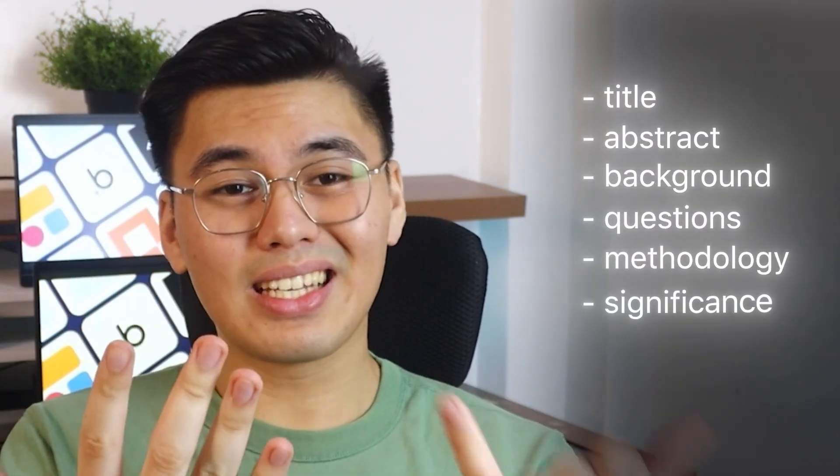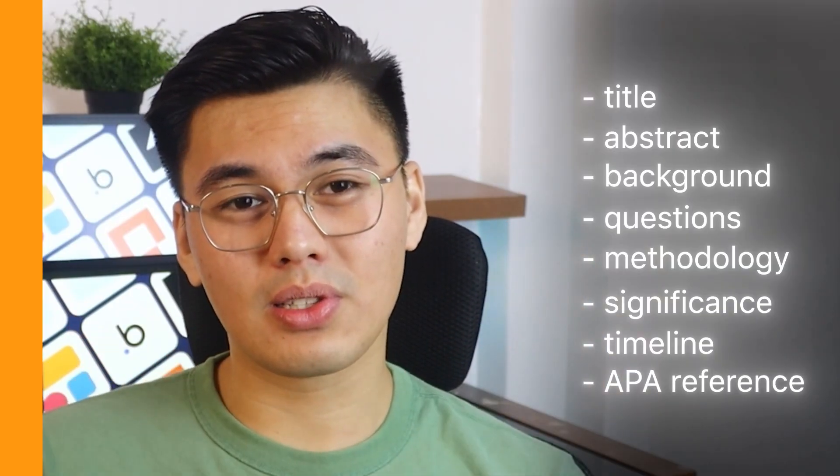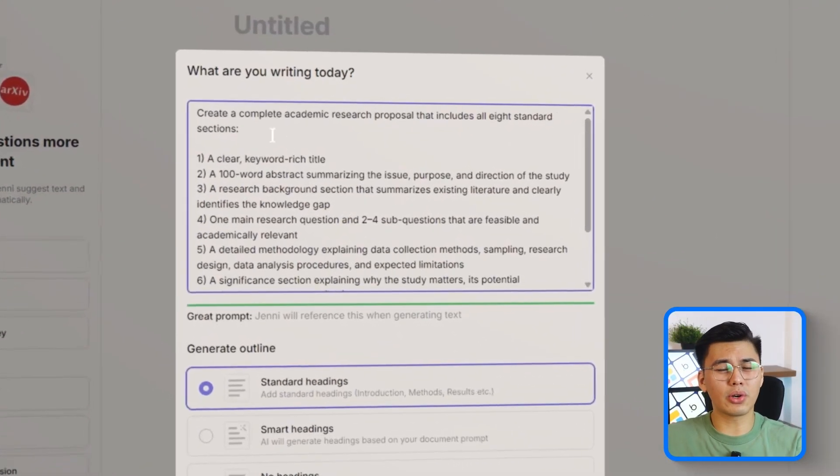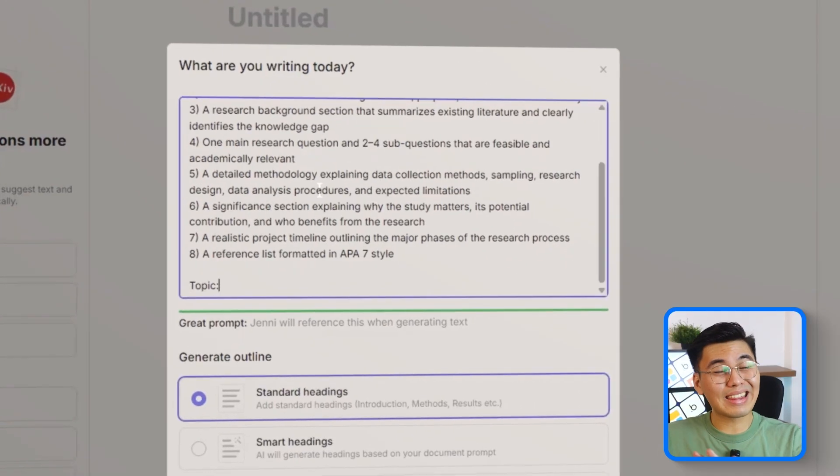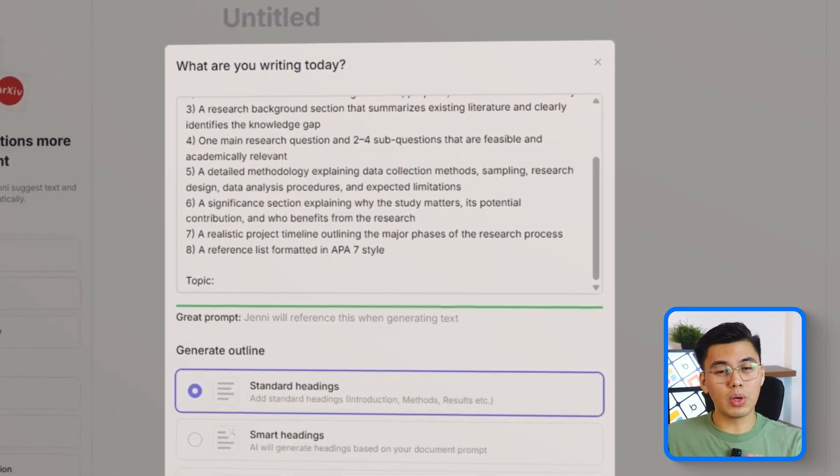The title, abstract, background, questions, methodology, significance, timeline, and even the full APA reference list. If you want to follow along later or recreate this on your own, you'll be able to copy the entire prompt word for word during the demo. Here's the prompt we will use.